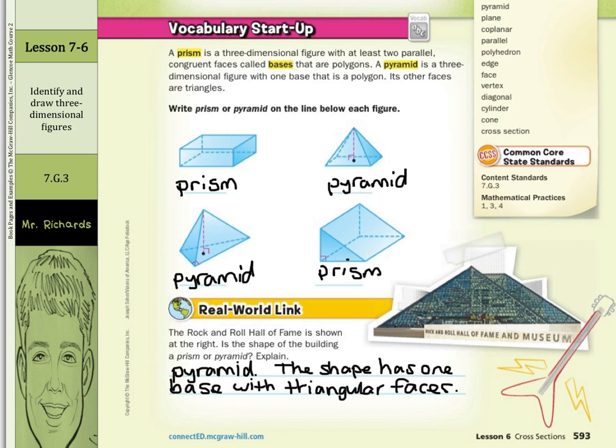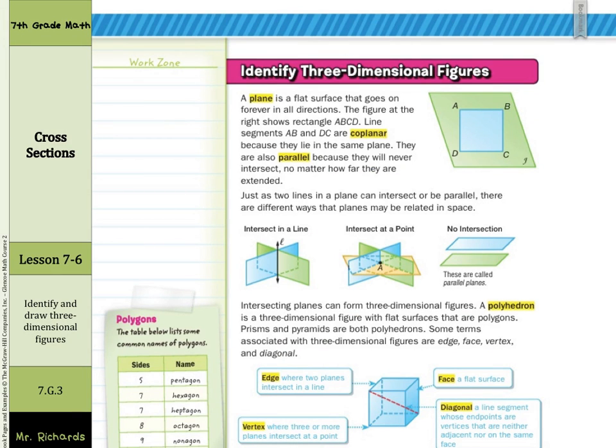Let's continue on. Identify three-dimensional figures. A plane is a flat surface that goes on forever in all directions. The figure at the right shows rectangle ABCD. Line segments AB and DC are coplanar because they are in the same plane. This thing here, this green shape, that's representing a plane. They're also parallel because they will never intersect, no matter how far they're extended. And you could take AB and go out forever, and DC and go out forever, and those will never intersect.